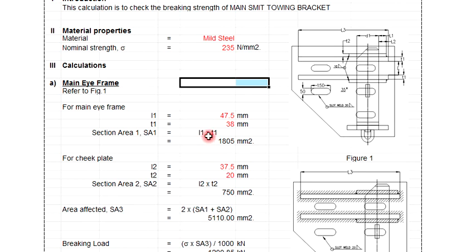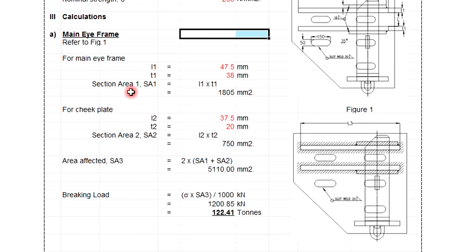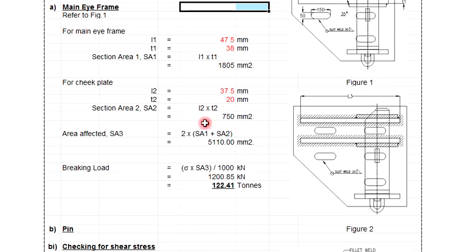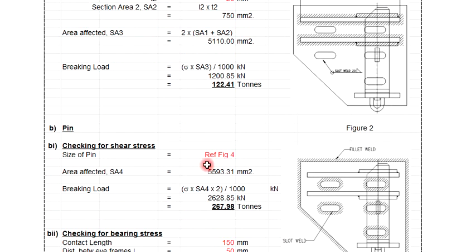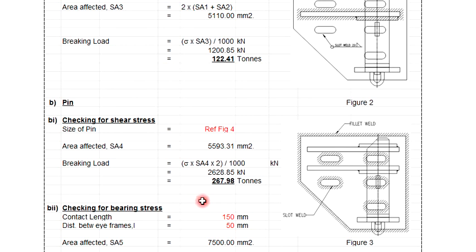After you determine the material property and do the calculation for the eye frame based on the inputs, the breaking load comes out to around 122 tons. After that, you can continue to check the pin — checking the shear area — and you get around 267 here.